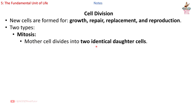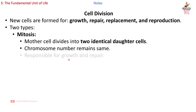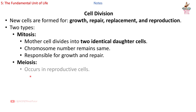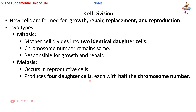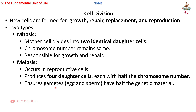Cell division: new cells are formed for growth, repair, replacement, and reproduction. Two types — Mitosis: mother cell divides into two identical daughter cells; chromosome number remains the same; responsible for growth and repair. Meiosis: occurs in reproductive cells, produces four daughter cells each with half the chromosome number; ensures gametes (egg and sperm) have half the genetic material.